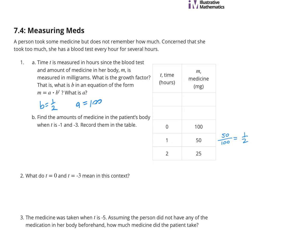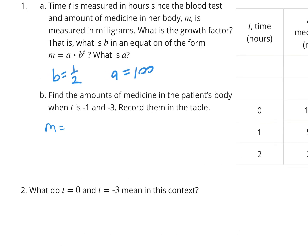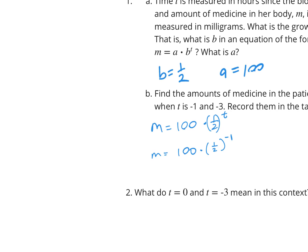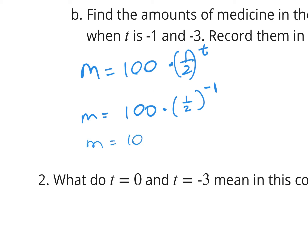Question two asks us to find M when T is negative 1 and negative 3. For T equals negative 1: M equals 100 times (1/2) to the negative 1. When a fraction is raised to a negative power, we still invert it — so (1/2) to the negative 1 becomes 2 to the 1st power. So we do 100 times 2, which gives us 200 milligrams at negative 1 hours.